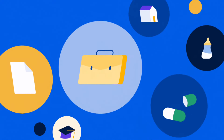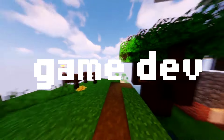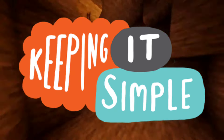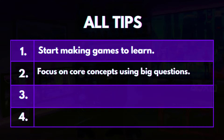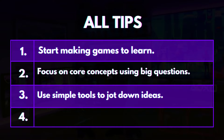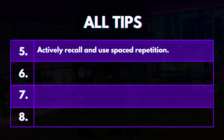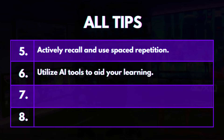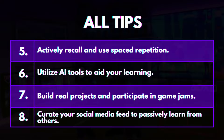Just being in the right environment can make a huge difference. The real moral of the story: start now, keep it simple, and have fun making games. To wrap it all up: start making games to learn, focus on core concepts using big questions, use simple tools to jot down ideas, apply the 80-20 rule to maximize your learning, actively recall and use spaced repetition, utilize AI tools to aid your learning, build real projects and participate in game jams, and curate your social media feed to passively learn from others.